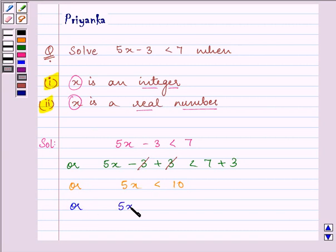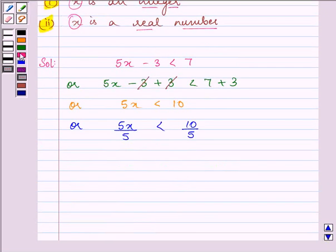Now dividing both sides by 5, we have 5x divided by 5 is less than 10 divided by 5, which gives us x is less than 2.